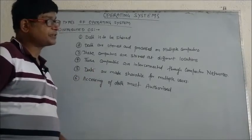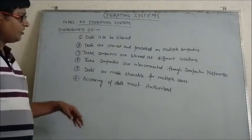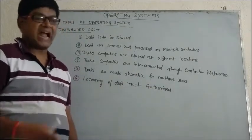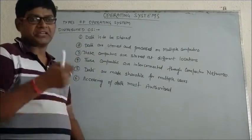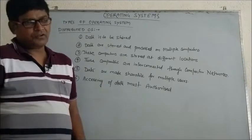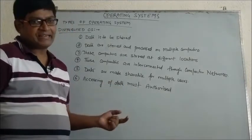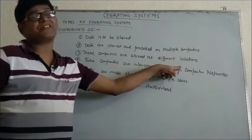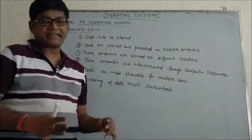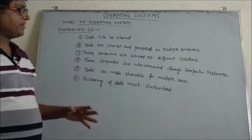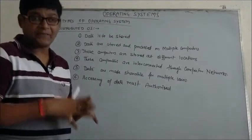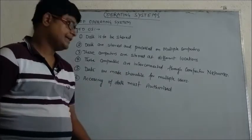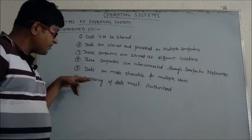These computers are interconnected via a computer network. This is because not only do we want key data stored and processed at different locations, but at any time if we want the data to be retrieved back to any site or location, we must be able to retrieve it. This is only possible if the multiple computers located at different locations are interconnected with computer networks — so interconnection is mandatory.